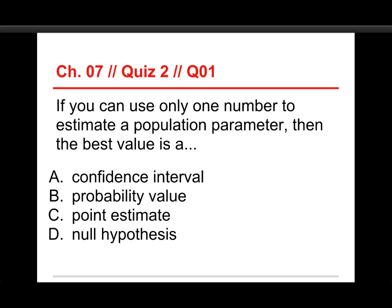The first question on this quiz is, if you can use only one number to estimate a population parameter, that's the point of estimation by the way, then the best value is a confidence interval, a probability value, a point estimate, or a null hypothesis.